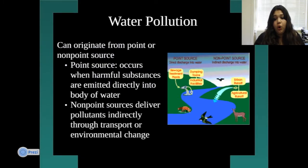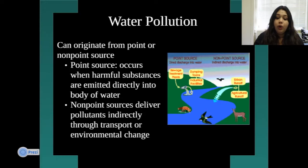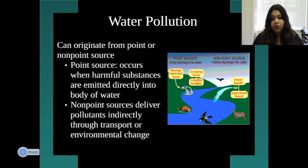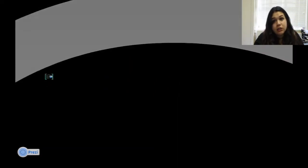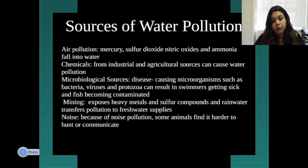Water pollution can originate from two sources: point source or non-point source. Point source occurs when harmful substances are emitted directly into a body of water. Non-point sources deliver pollutants indirectly through environmental transport and change. So point source is direct and non-point source is indirect, but both pollute the water.